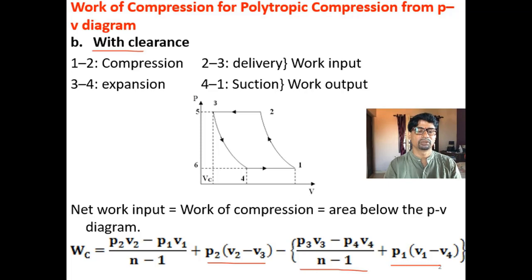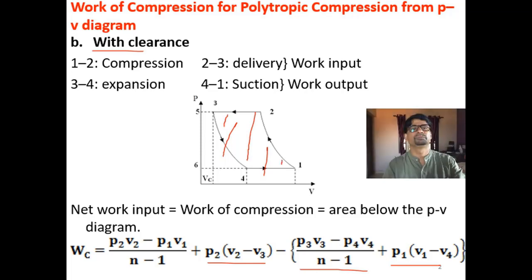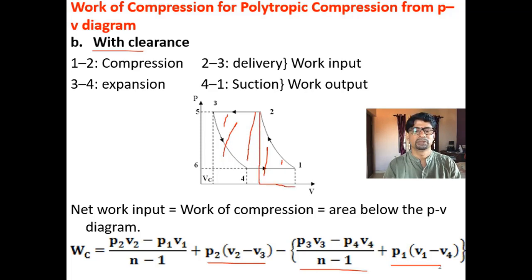Also, you have to subtract the work of suction 4 to 1, which is P1 into (V1 minus V4). So the work of compression is the area enclosed by 1, 2, 3, 4, 1. The work done during process 1 to 2 covers a large area via the polytropic formula P2V2 minus P1V1 divided by (N minus 1). Area under 2 to 3 is the rectangle P2 into (V2 minus V3).